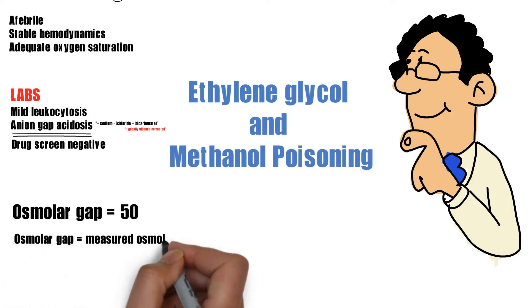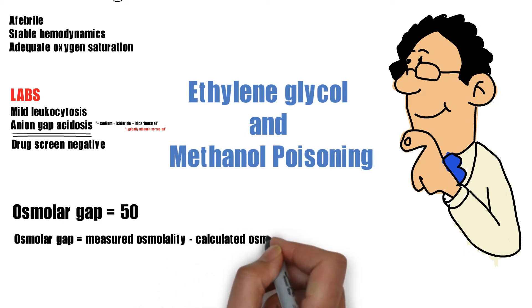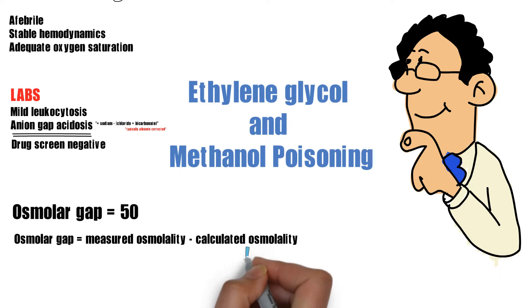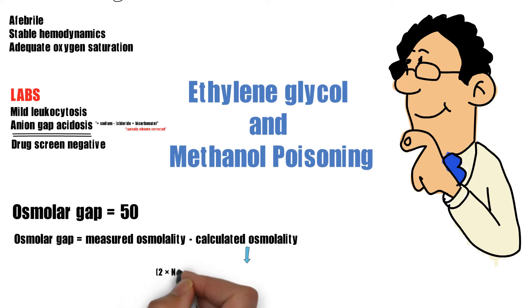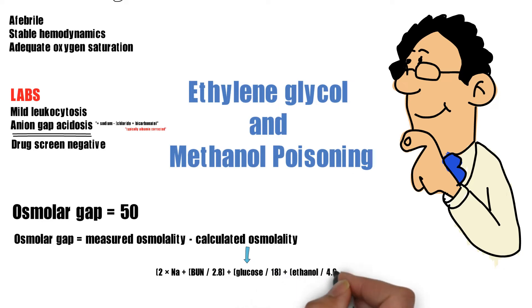As a reminder, the osmolar gap is the difference between the measured osmolarity minus the calculated osmolality. The calculated osmolality is obtained by the equation: 2 × sodium + BUN/2.8 + glucose/18 + ethanol/4.6. You might find a different denominator for the ethanol part depending on the equation that you use.